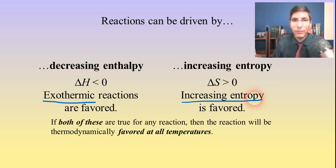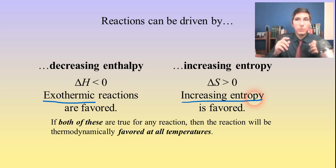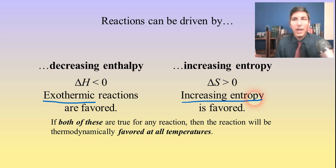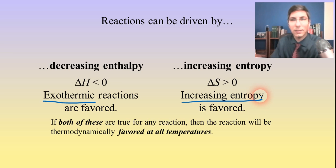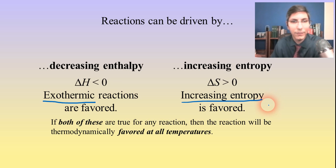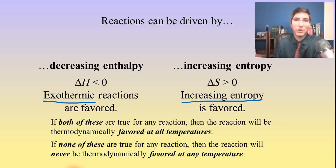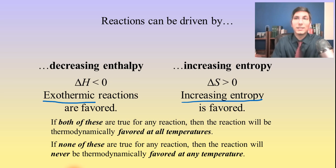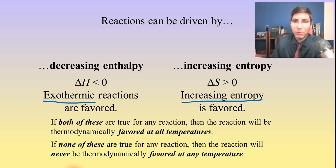If both of those are true — if it's an exothermic process and it's increasing in entropy — then that reaction has two driving forces, enthalpy and entropy, and it's going to be thermodynamically favored. It's a TFP at all temperatures — a reaction that will always be able to happen at any temperature. And there are several reactions for which both of those things are true. Conversely, if it's endothermic and has decreasing entropy, it is not a TFP. It doesn't have any driving forces, so that reaction would never be thermodynamically favored at any temperature.